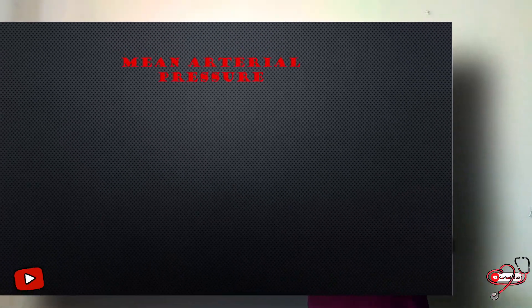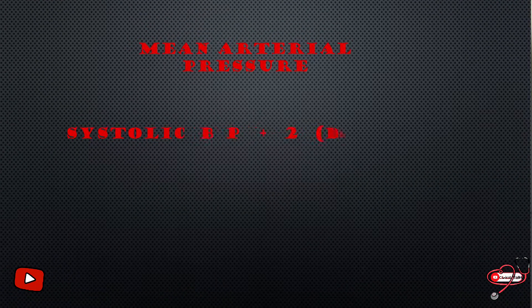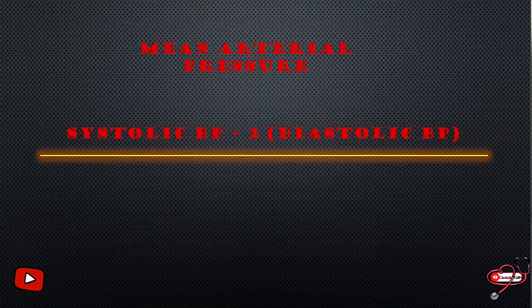So don't forget how to calculate MAP — mean arterial pressure: systolic plus 2 diastolic, divided by 3. If you have any doubts or suggestions, please comment. Thank you.